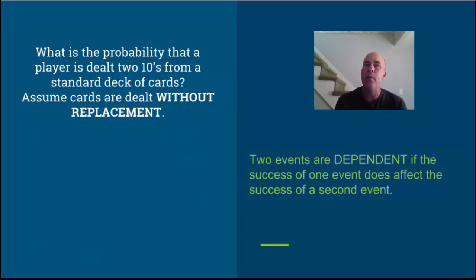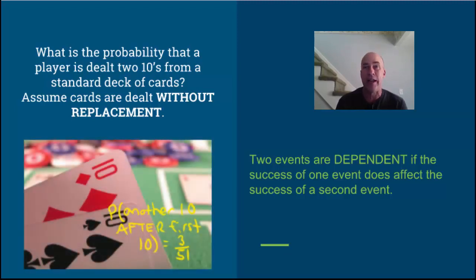Now we draw a second card. Think about how many cards are left and how many successes there are. The probability on our second draw that we get a 10 after we got the first 10 is now 3 out of 51. There'll be 51 cards remaining, and three of them are what we'd like to have.